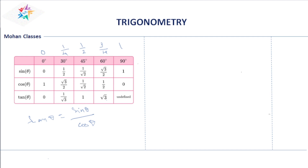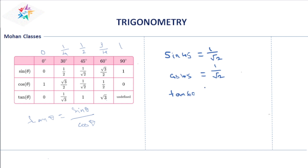Now, how to find the value? For example, sin 45 is 1/√2. Cos 45 is also 1/√2. Tan 60 is √3. These values are very important when evaluating expressions like sin 30, cos 60, and so on.